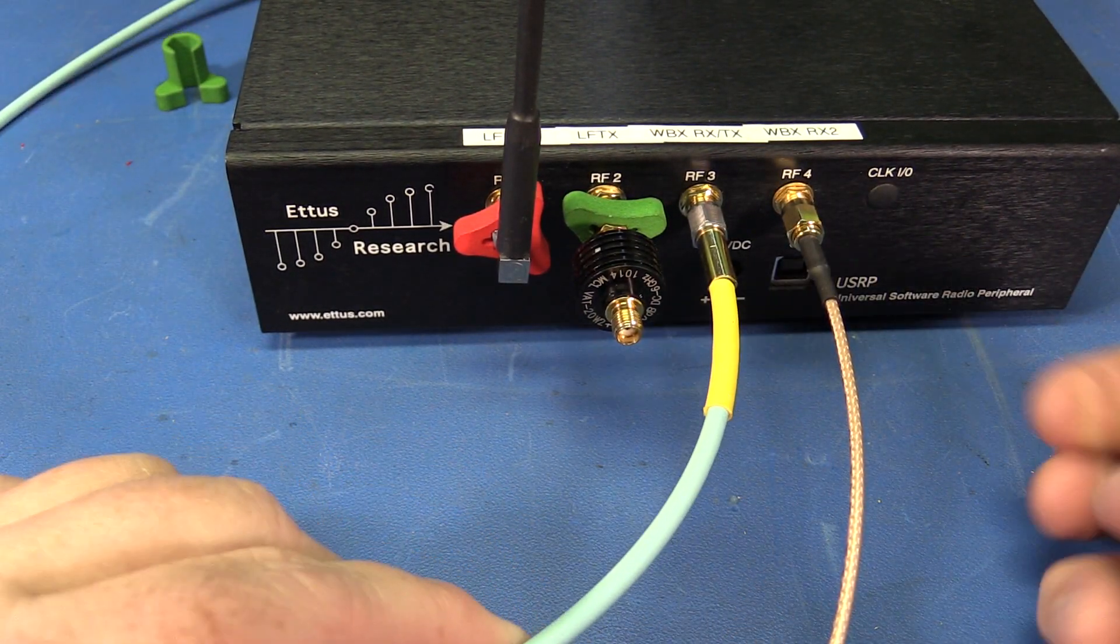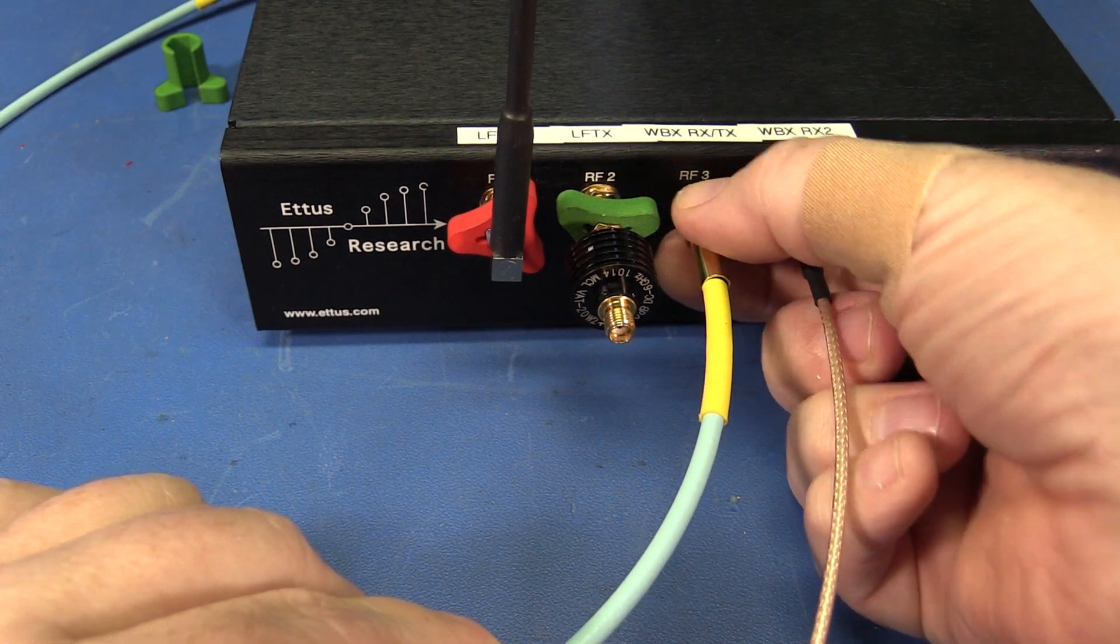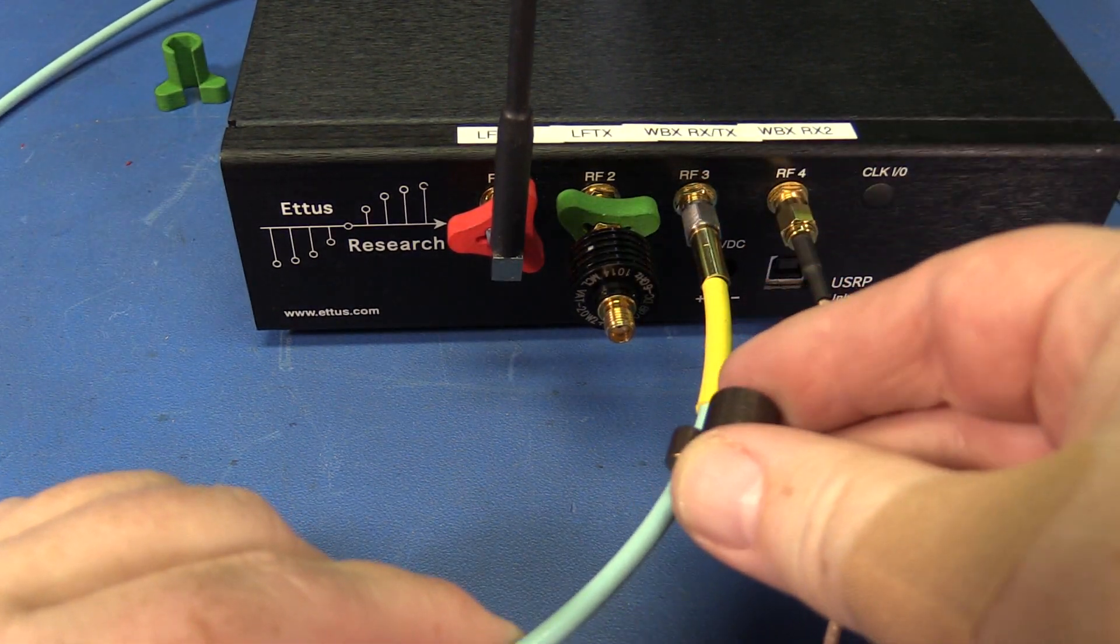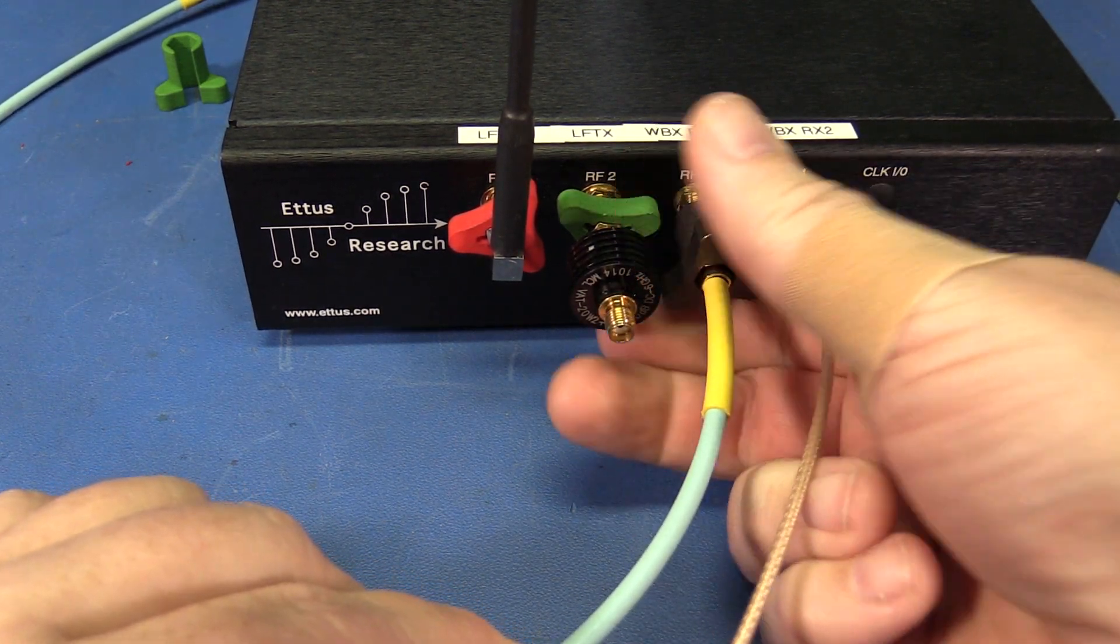So even if this connector is really tight, too tight for me to unscrew by hand with other connectors and cables in the way, I can slip on this little barrel wrench here and loosen it like so.